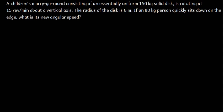We have a question under angular momentum. A children's merry-go-round consisting of an essentially uniform 150 kg solid disk is rotating at 15 revolutions per minute about a vertical axis. The radius of the disk is 6 meters. If an 80 kg person quickly sits down on the edge, what is the new angular speed?